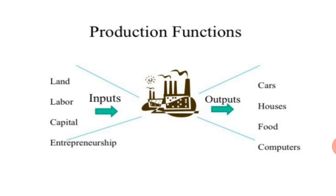Total product refers to the total volume of goods and services that can be produced in a particular time period. We mention it as TP, which means total product. The total product increases when the quantity of the variable input increases — if there is an increase in labor or in capital, the total product automatically keeps increasing.